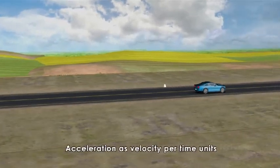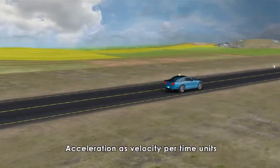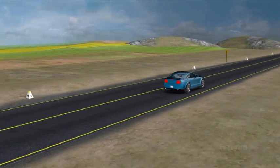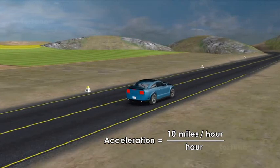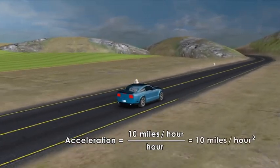But we express acceleration as velocity per time units. So it will be 10 miles per hour per hour. These units can be mathematically simplified to 10 miles per hour squared.